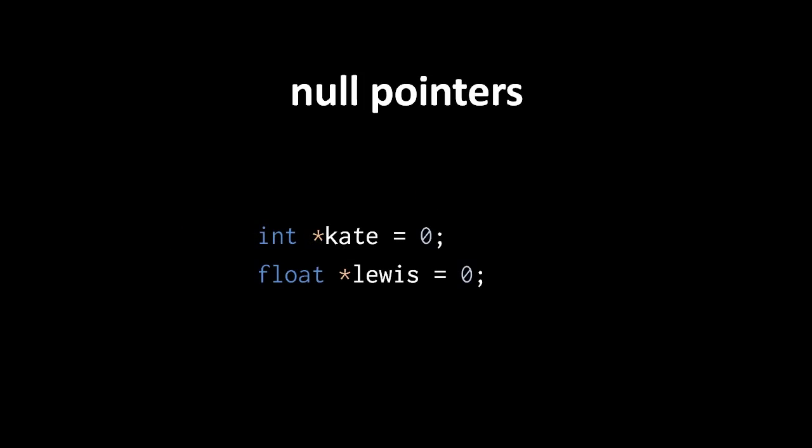What C calls a null pointer is simply a pointer value representing the address 0. C guarantees that address 0 will be left unused, so a null pointer is guaranteed to represent nothing. Normally, we can't assign numbers directly to a pointer, but the number literal 0 is a special case. When you assign the number literal 0 to a pointer, C assigns a null pointer to the target without you having to cast the number to a pointer.